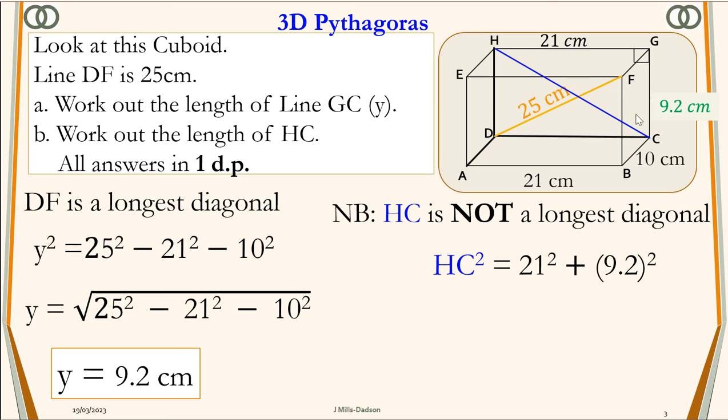Taking square root on both sides, you work out HC to be 22.9 cm. So this is how to reverse the Pythagoras 3D equation to work out a missing side of a cuboid.